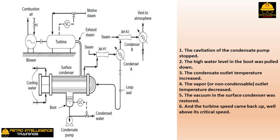Everything was finally going well, except for one minor problem: the governor's speed control valve was 100% open. The plant's boiler house was not sending the proper pressure steam — 460 psig steam was expected but only 400 psig was being received. This reduced the steam flow through the nozzles in the turbine steam chest by 15%. The operators at the power station assured that normal 460 psig steam pressure would be restored by morning. It is not a good idea to run a turbine with the governor's speed control valve wide open — because you no longer have any speed control.